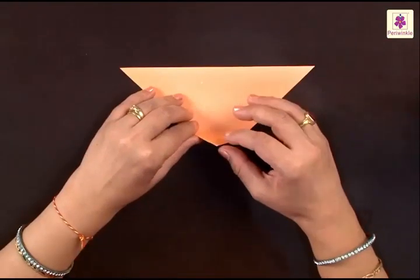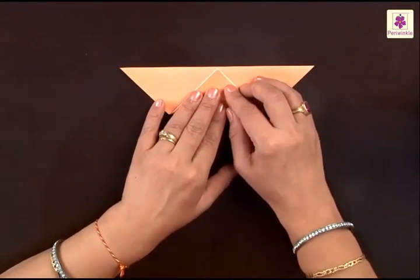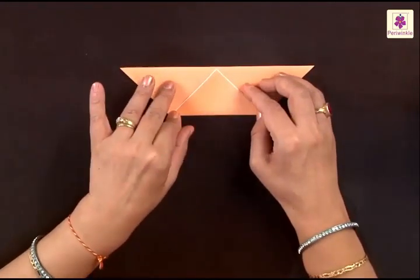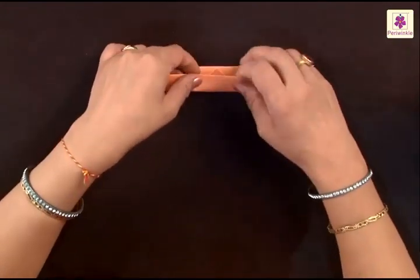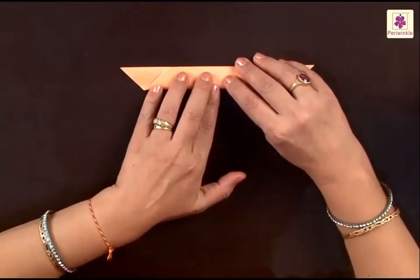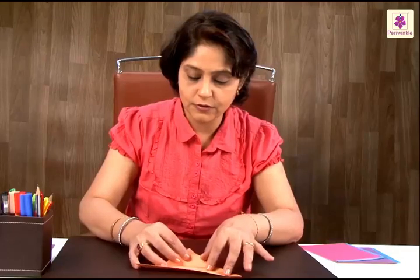You now have to lift the bottom corner to the top edge and press the fold. Once again lift the bottom side and fold it to the top side. We need to unfold all of these three folds and you will find lines on your triangle. These lines are very important. They are going to help you in the next few steps.